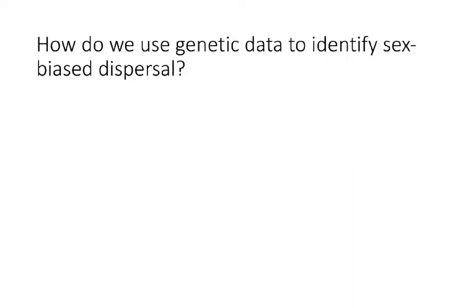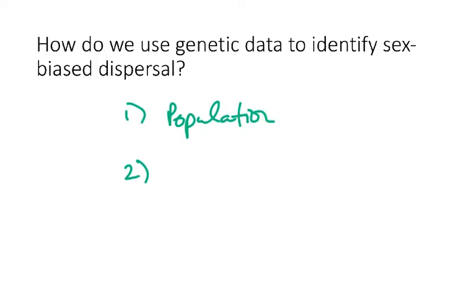Since this is a molecular ecology class, we'll talk about how we can use genetic data to identify whether sex-biased dispersal is happening or not. There are two general types of analyses: population-type analyses, where we look at individuals within a population as a whole, and individual-level analyses. We'll focus on population-level analyses in this video and individual-level ones in the next video.